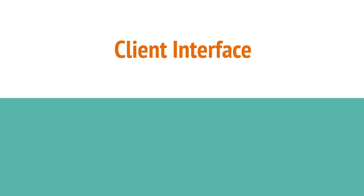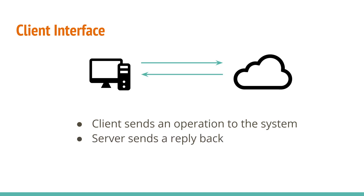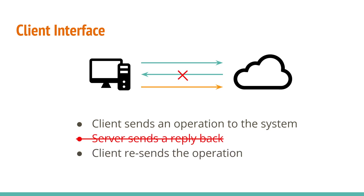Now let's look at how the Chain Replication system works, starting off with the client interface. When the client wants to read or write to an object, it will send a request to the distributed system. To notify the client that the operation executed successfully, the distributed system will send a reply back. If the client doesn't receive a reply for a certain duration, it will assume that the request was either lost or ignored and resend the operation. This can be an issue if the operation isn't idempotent. In this case, the client can first query the target data to check if the operation was executed before resending the operation.